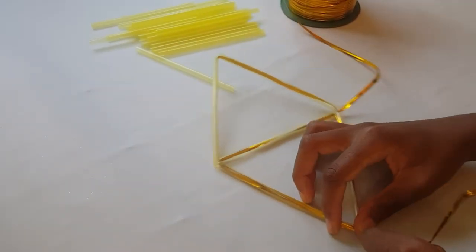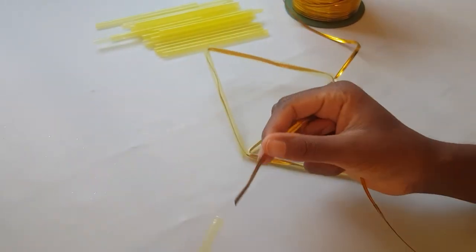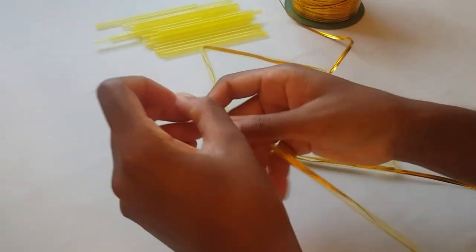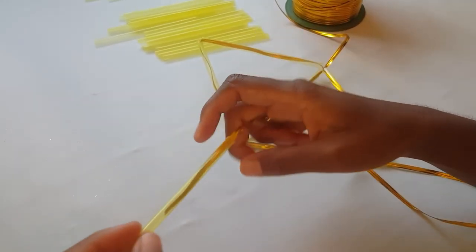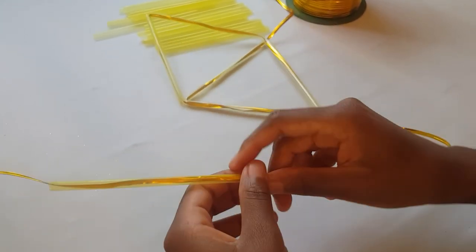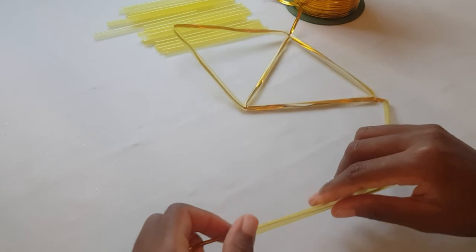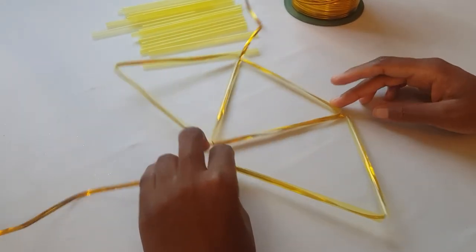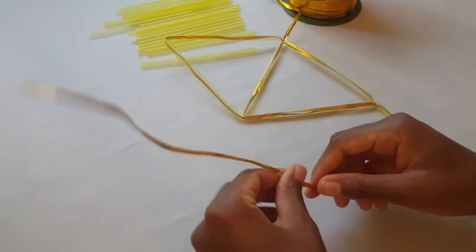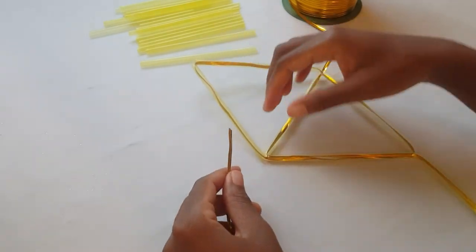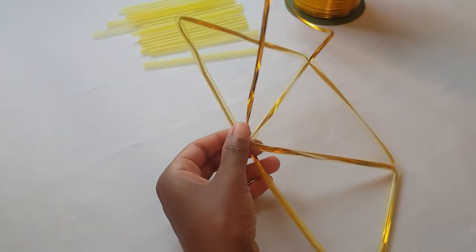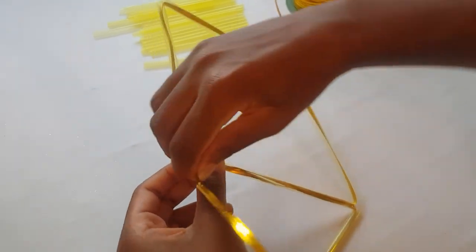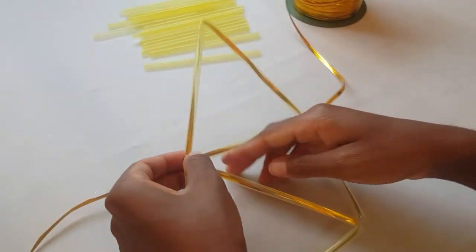Now we're going to attach another triangle, so we do exactly what we did the last time - place two of these straws through the gold wire. Like so, now we have this. We're going to wrap the gold wire around here to secure it.